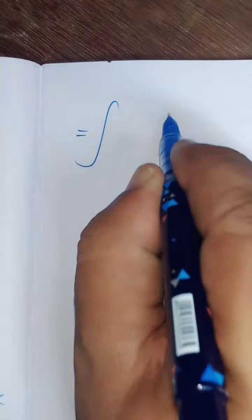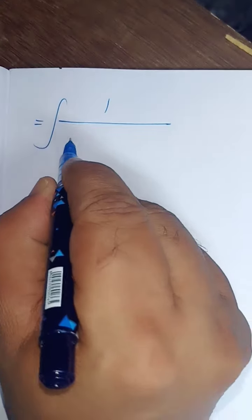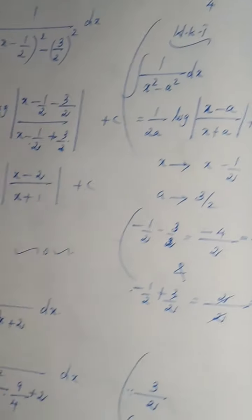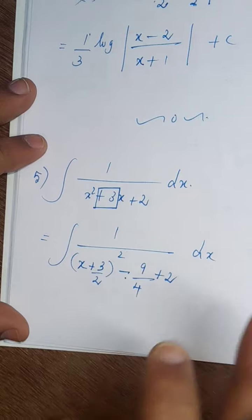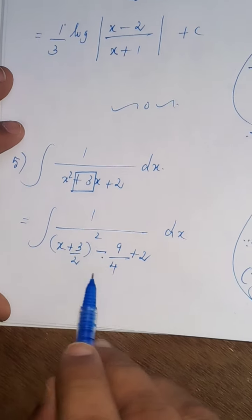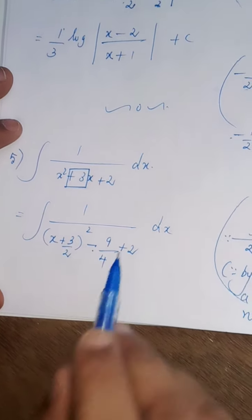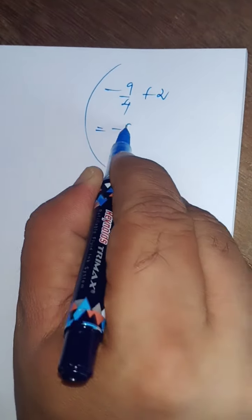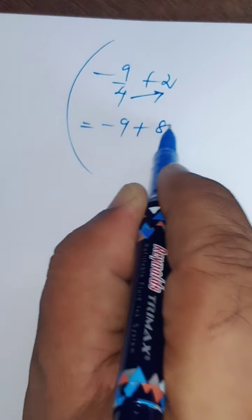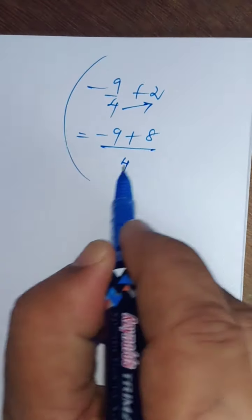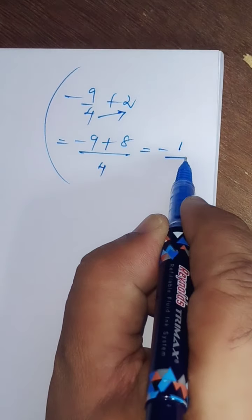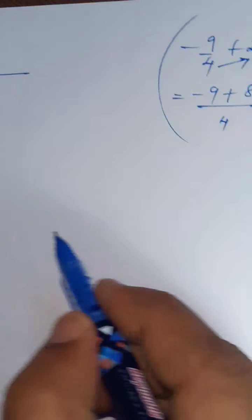That is equal to integral 1 divided by x plus 3 by 2 the whole square as it is, x plus 3 by 2 the whole square as it is. We have to simplify this one. Minus 9 by 4 plus 2. I do here. Minus 9 by 4 plus 2 equals minus 9 plus 4 2s or 8 divided by 4. That is equal to minus 9 plus 8 equals minus 1, divided by 4.